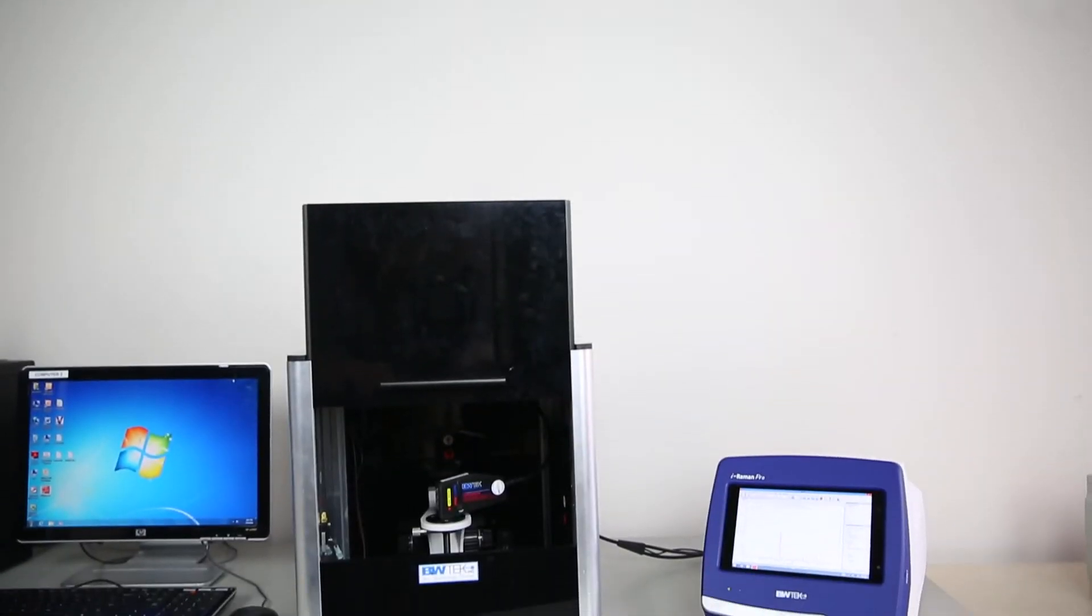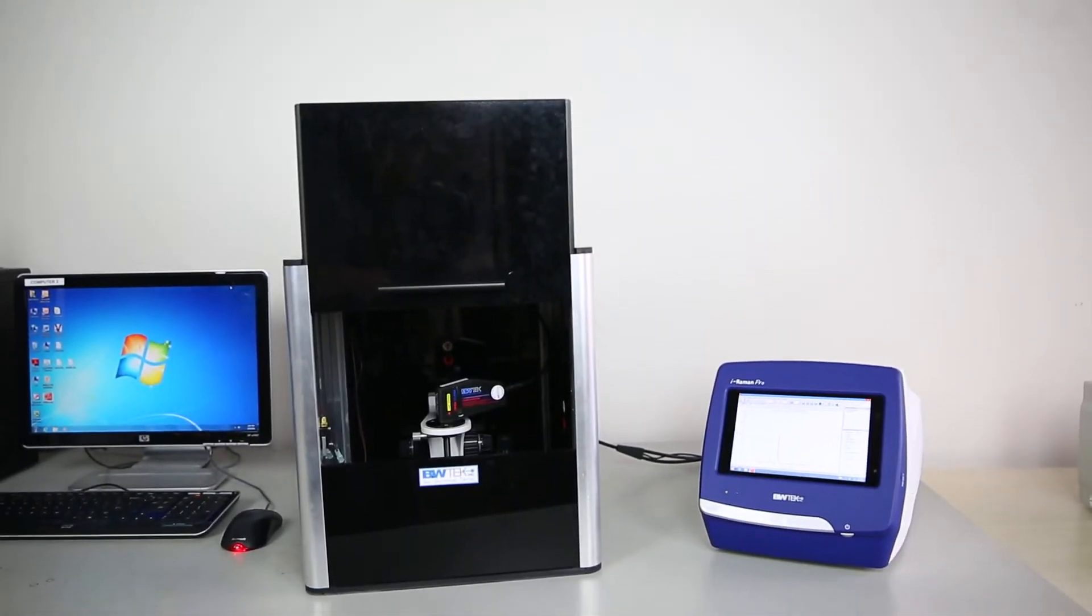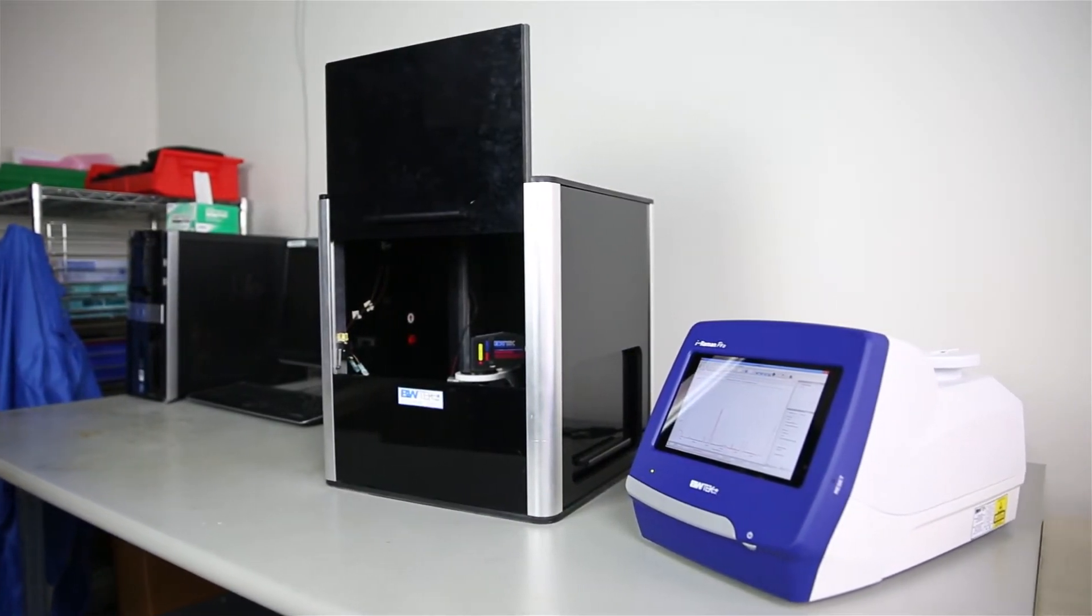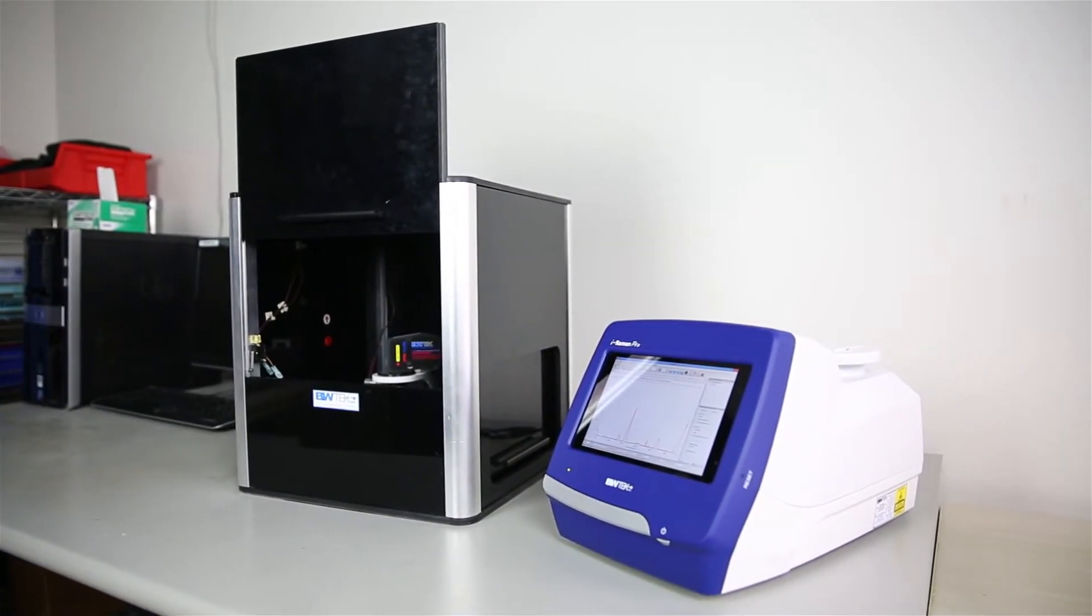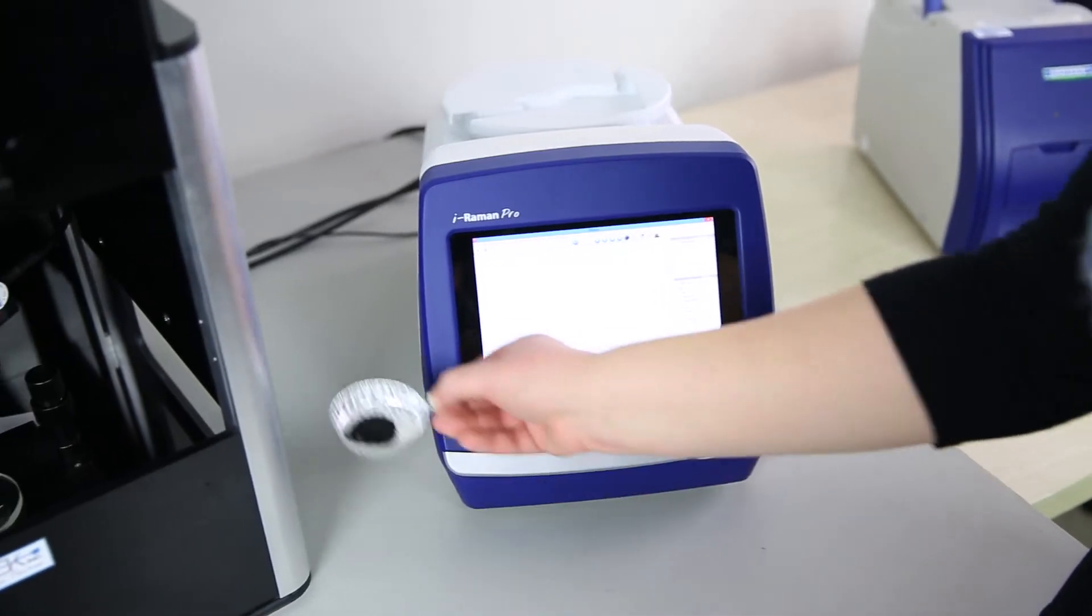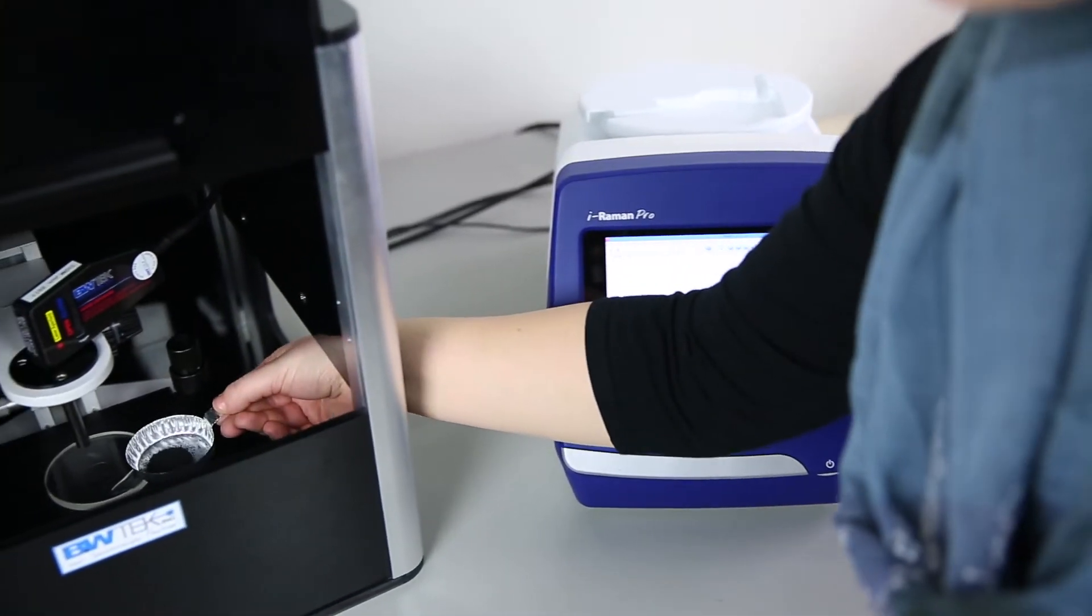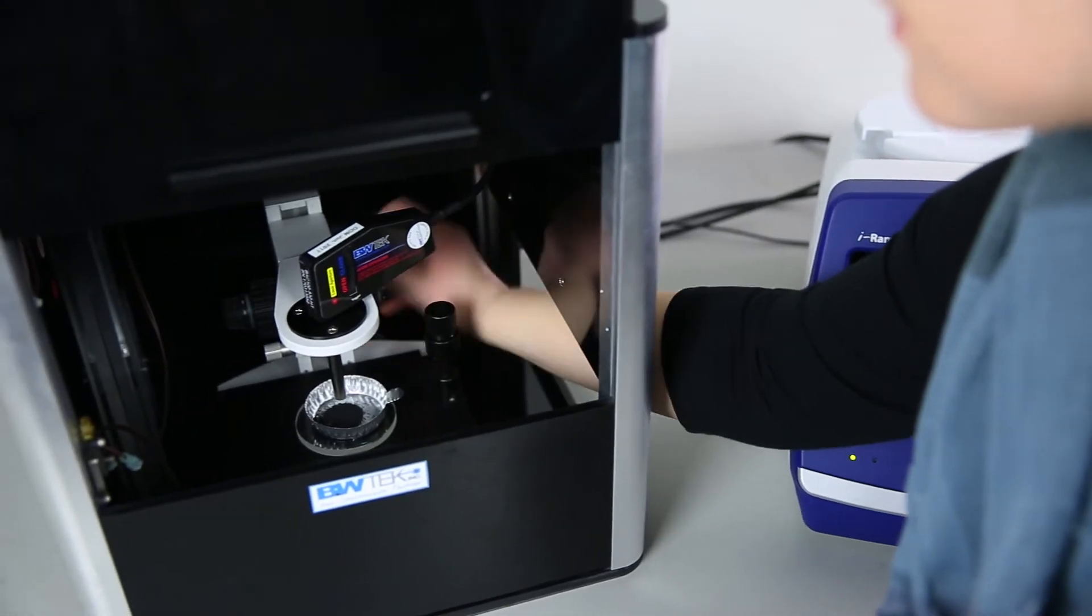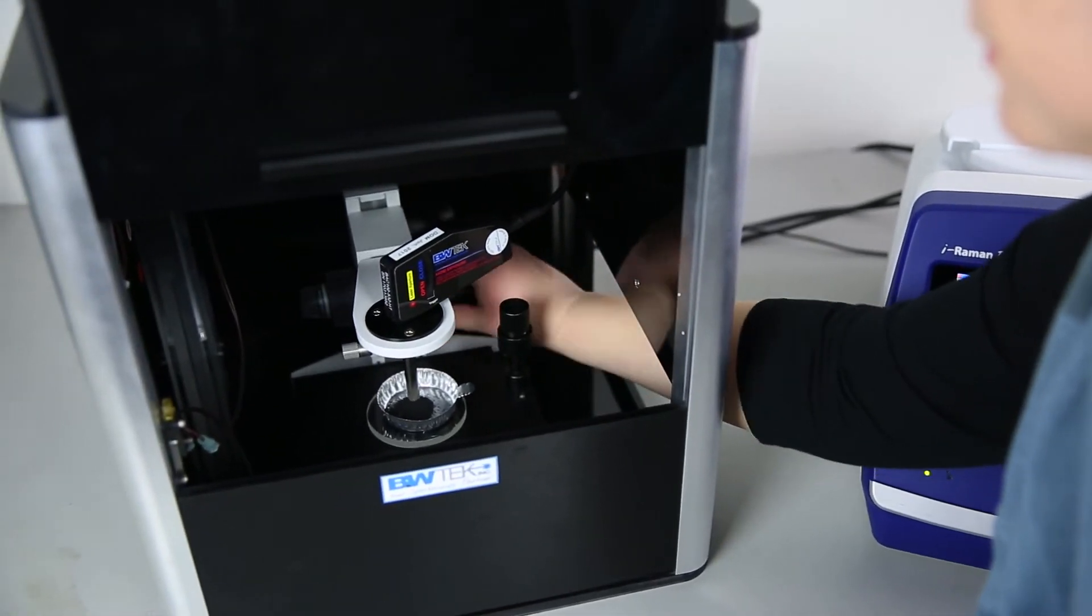This portable instrument utilizes a high-throughput Raman system with a back-thin CCD and 532 nanometer laser excitation via a fiber-optic sampling probe. The Carbon Raman Analyzer comes equipped with a probe holder and an adjustable XYZ stage for reproducible measurements, as well as a class 1 laser enclosure for safe operation.